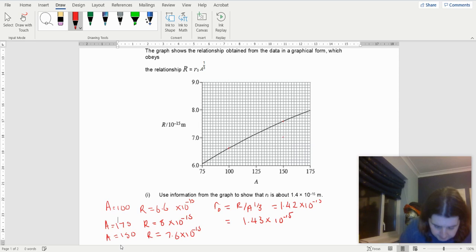I get 1.43 × 10⁻¹⁵. And this one, I've got 7.6 × 10⁻¹⁵ divided by 150 to the power of 1 over 3. I get 1.43 again, 1.43 × 10⁻¹⁵.